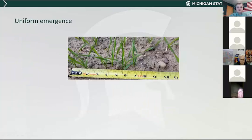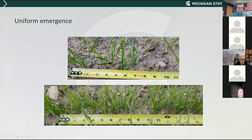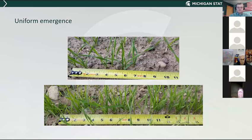Uniform emergence is also very important. In this picture you can see a big skip and some doubles — you want as uniform a stand as possible, something where you can't hardly identify any gaps. Make sure you calibrate your drill and get it set up with good uniform depth. Also be aware that in crusted ground, plants can be trying to emerge underneath and can't break through. If you have ground that tends to crust and you get the right rainfall conditions, you might have to deal with that.